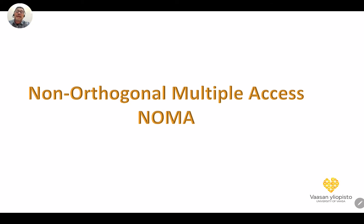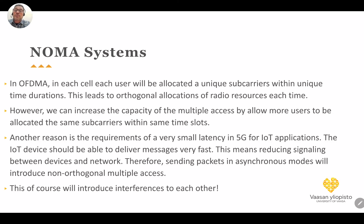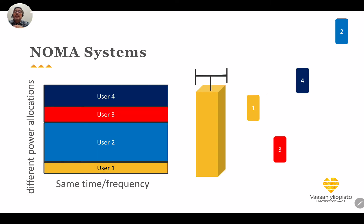Without synchronization between transmitter and receiver, the transmissions will be non-orthogonal. So, to support a very large number of devices per cell and minimize latency, we need to relax the orthogonality condition. This is the reason for moving to Non-Orthogonal Multiple Access (NOMA). We already know non-orthogonality from CDMA, where even orthogonal spreading codes at the transmitter cannot be guaranteed orthogonal at the receiver due to different multipath delays.